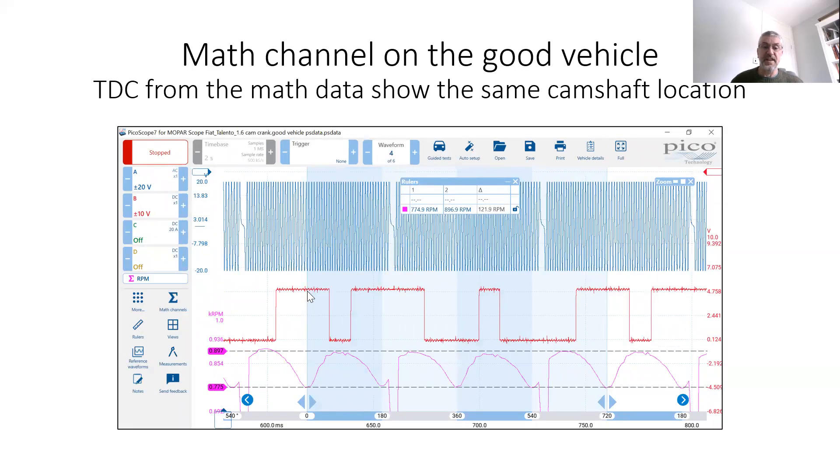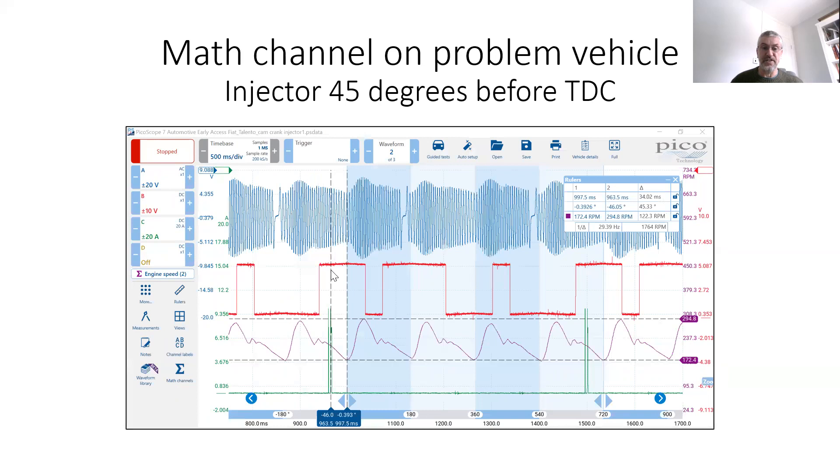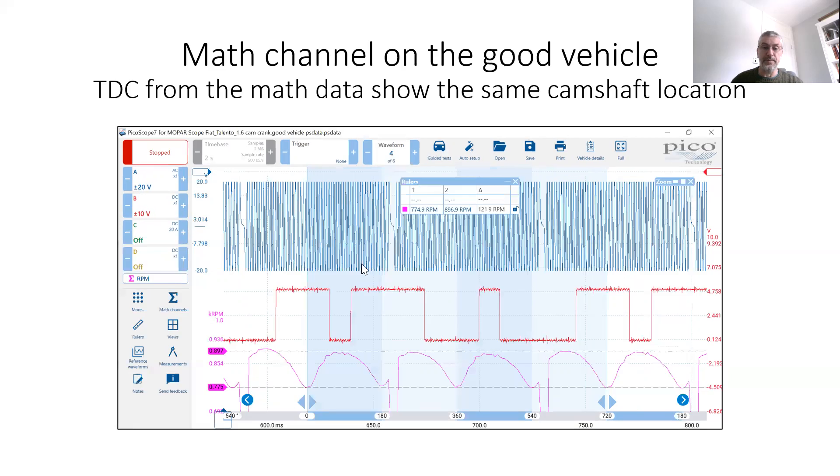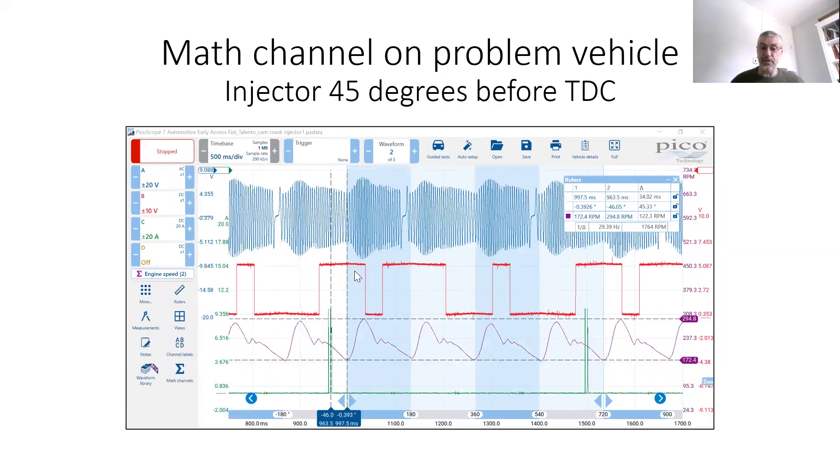So let's compare this to our known good. And you can see TDC is in exactly the same position on the camshaft. The injector is firing quite early on in this camshaft position, but TDC is just after the midway point, and the same here. It's just after the midway point. So based on this, we can say the camshaft and crankshaft are timed up exactly the same on both vehicles.